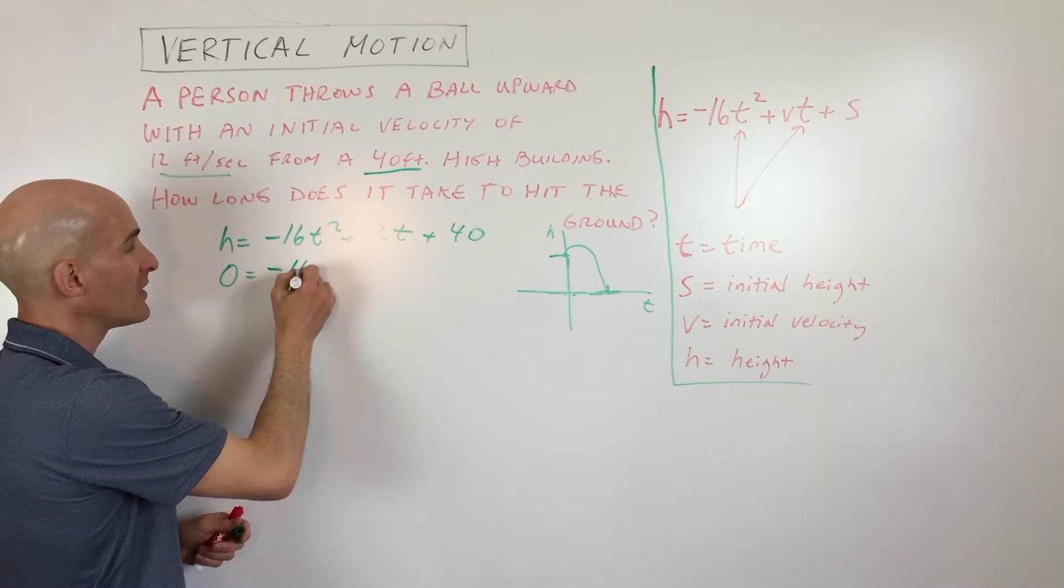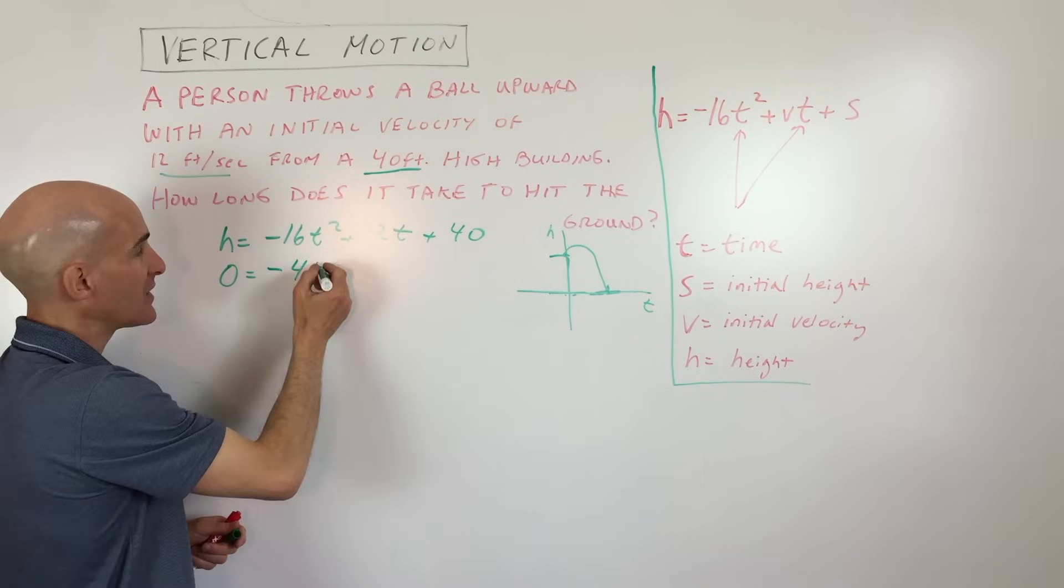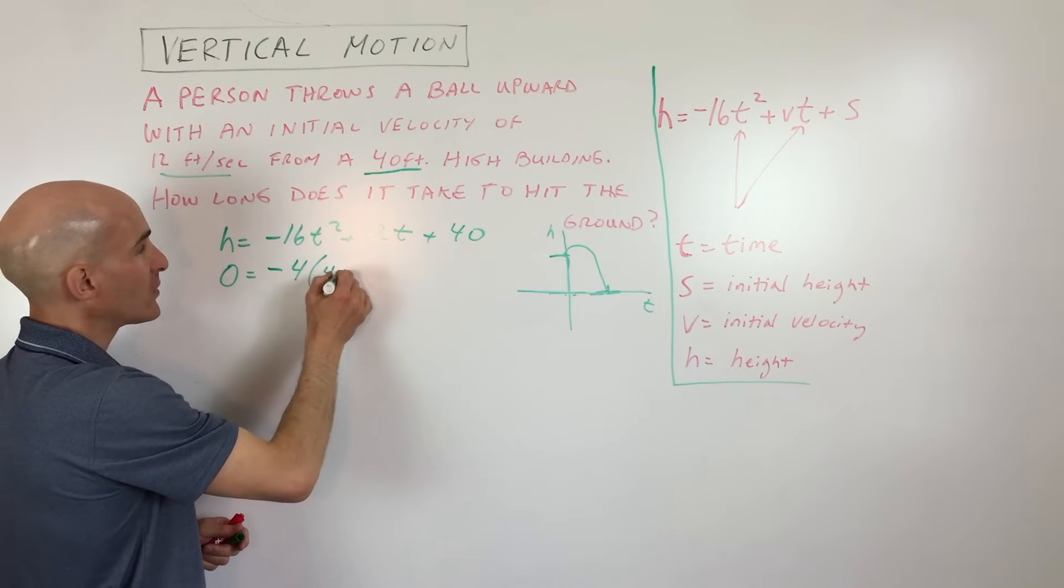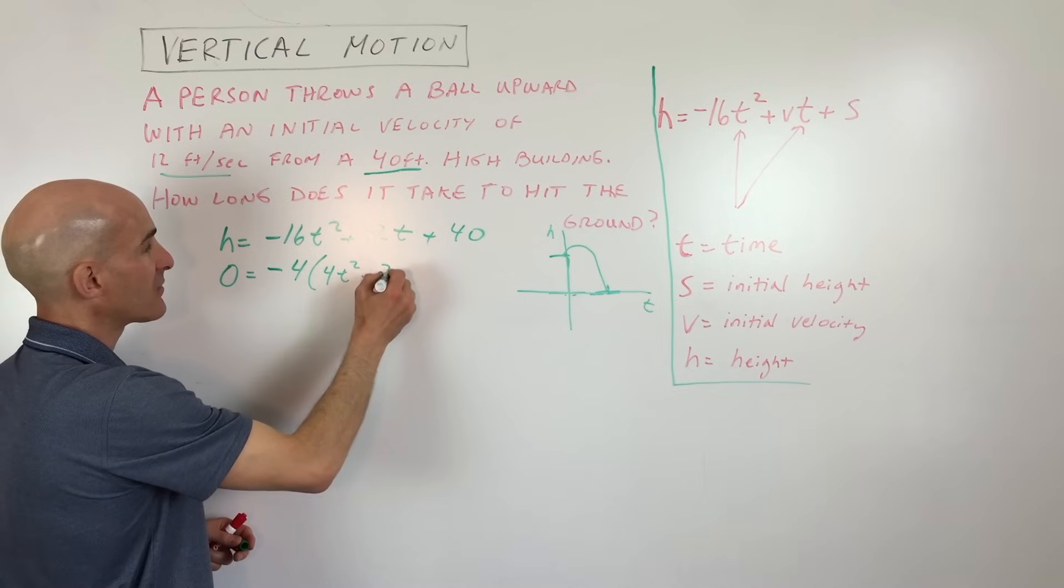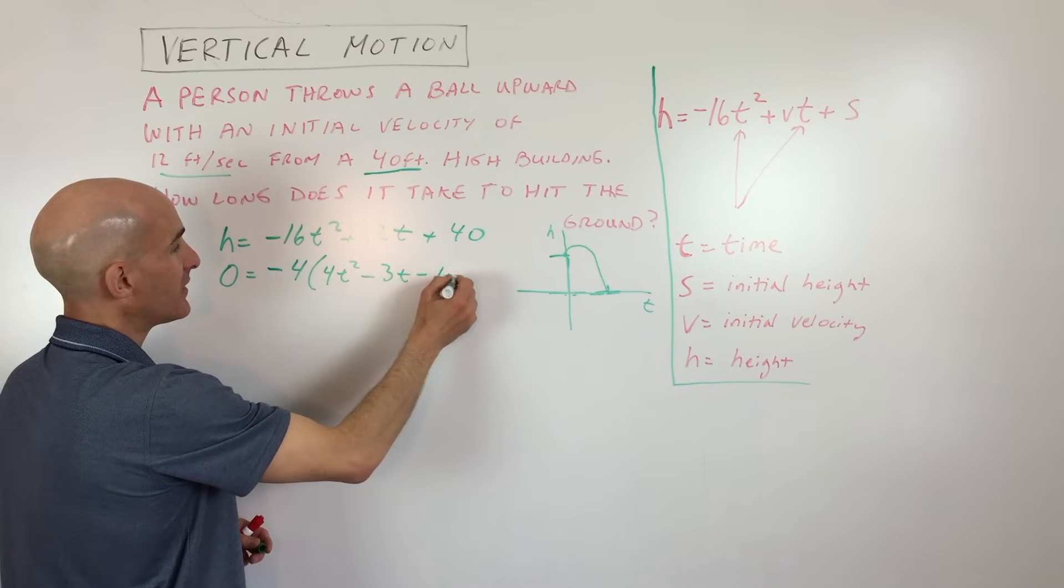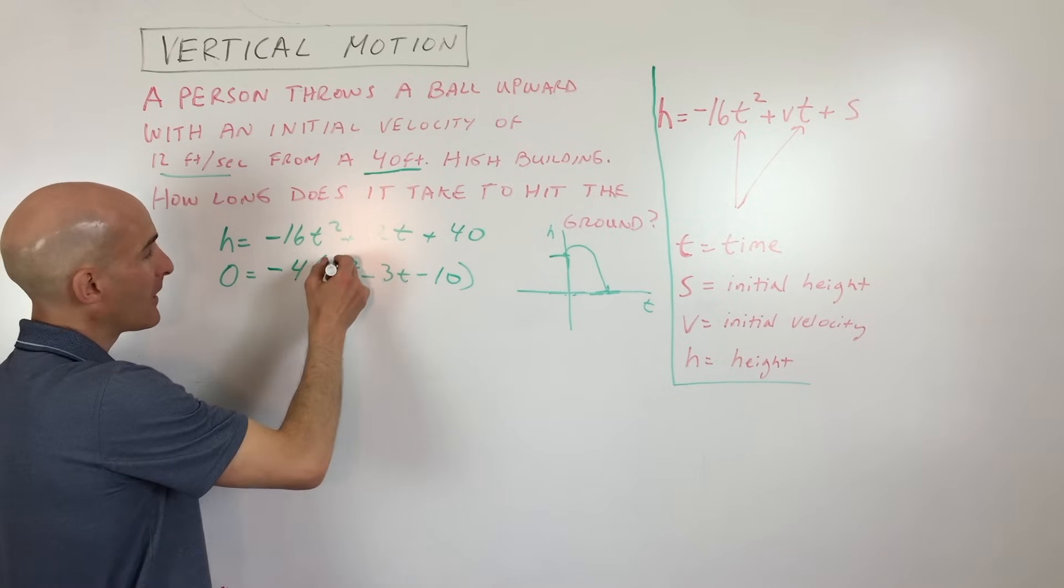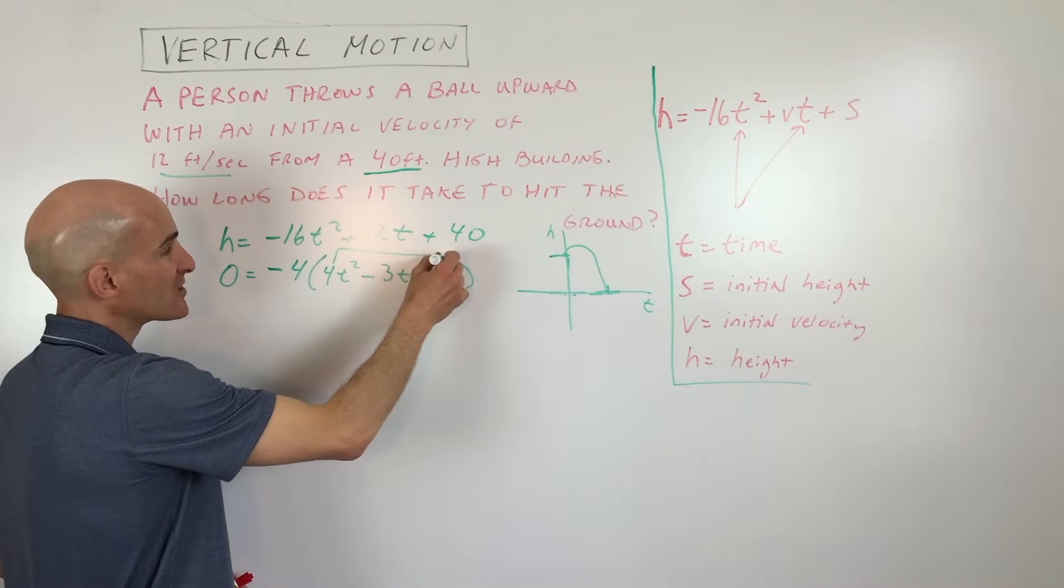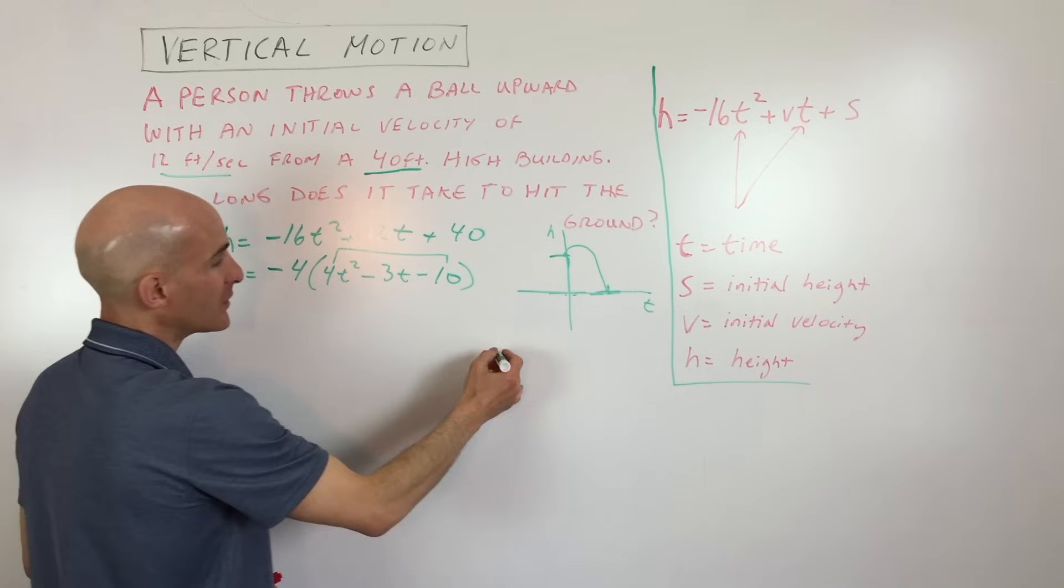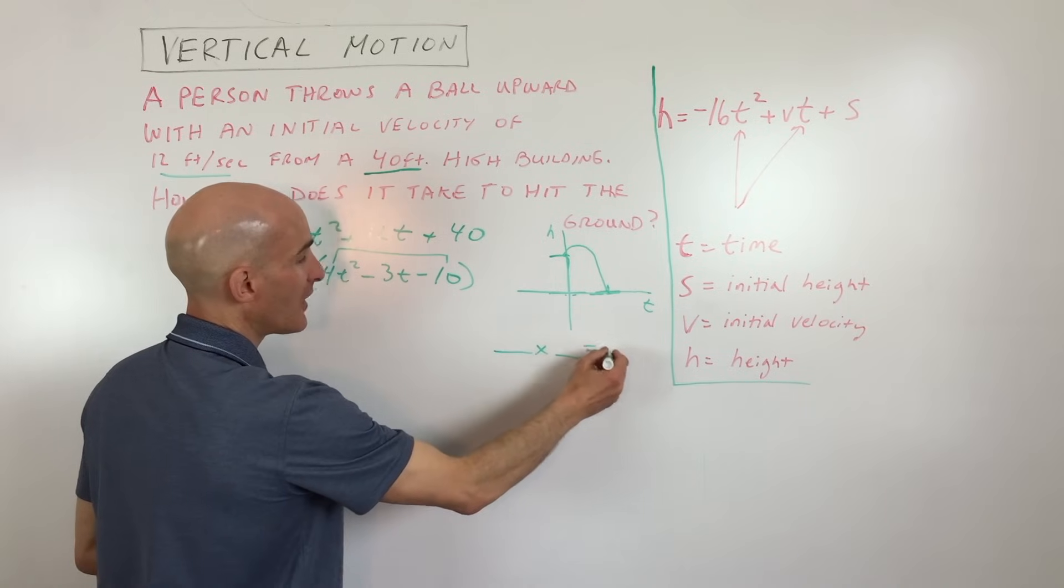So what I'm going to do is I'm going to factor out the greatest common factor, which is negative 4. So I get 4t squared minus 3t minus 10. And then what we're going to do is we're going to try to see if we can factor this further. So if we take the leading coefficient times the constant, that's negative 40.